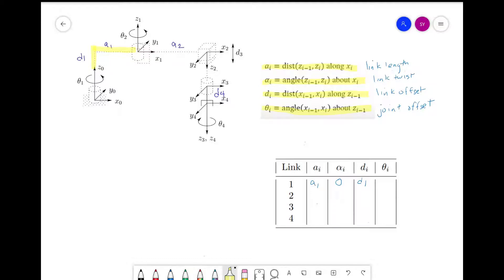For theta, we have a revolute joint that we have to account for of theta_1. And there's no other rotation needed to align x_0 and x_1. But let's mark the revolute joint with a star here so that we know that it's a variable.